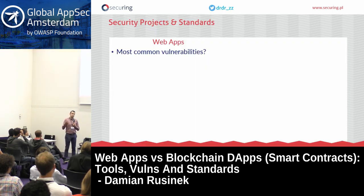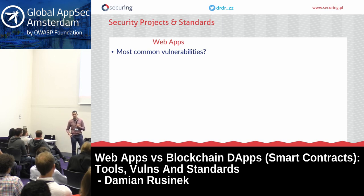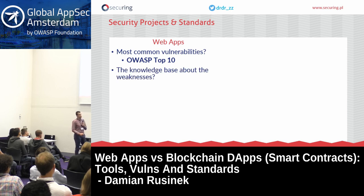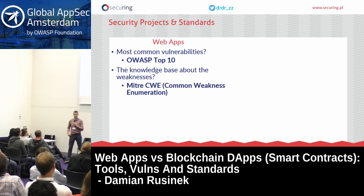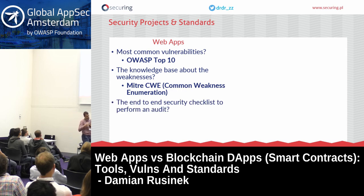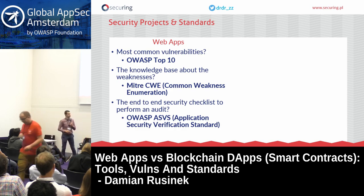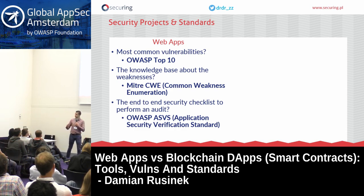If you need to know the most common web application vulnerabilities, you'd go for the OWASP Top 10. If you need a knowledge base for common weaknesses, CWE — Common Weakness Enumeration. And for a security checklist to perform an end-to-end audit, ASVS — Application Security Verification Standard. We can ask the same questions for decentralized applications, because this is AppSec — application security.